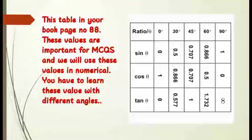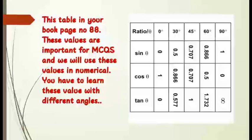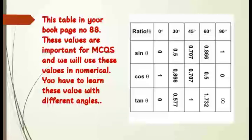Now we have a table on your book page number 88. When we have different angles like 0°, 30°, 45°, 60°, 90°, there are values we calculate. You have to learn these on your fingertips. Sin 0° = 0, sin 30° = 0.5, sin 45° = 0.707, sin 60° = 0.866, sin 90° = 1. Now cos theta: